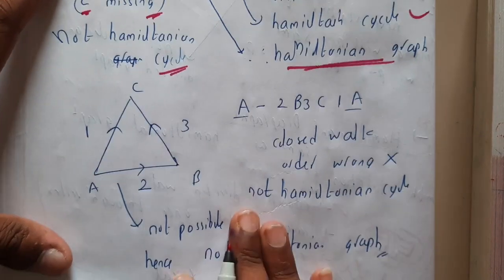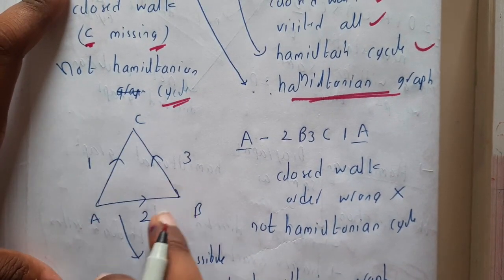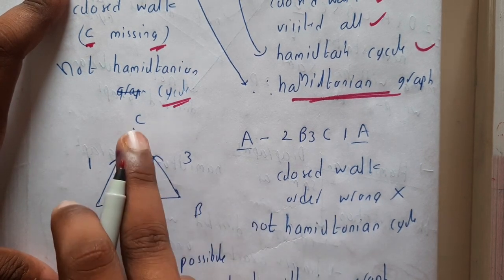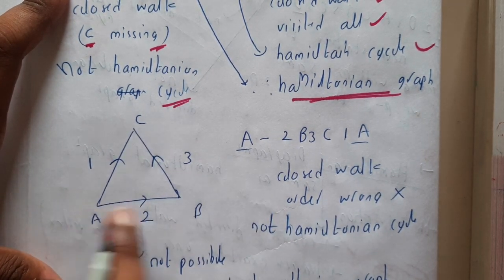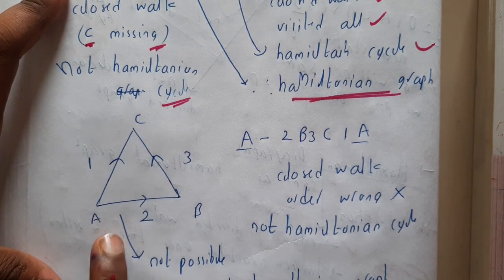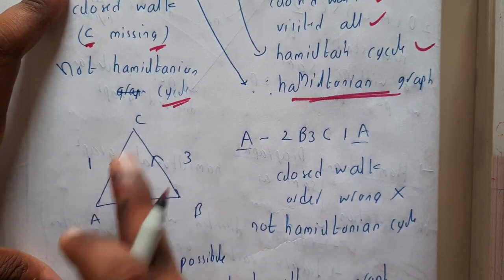Similarly, if you take this example, you cannot say by observing only. From A you can go to B and from B you can go to C, but you cannot come back from C to A.